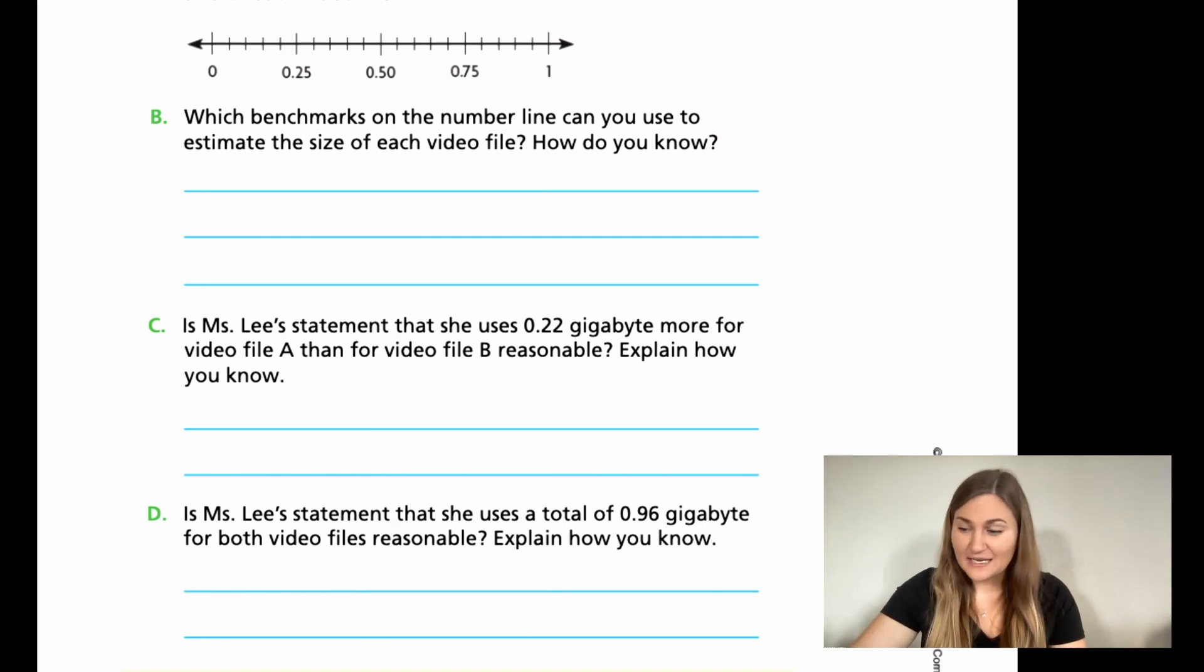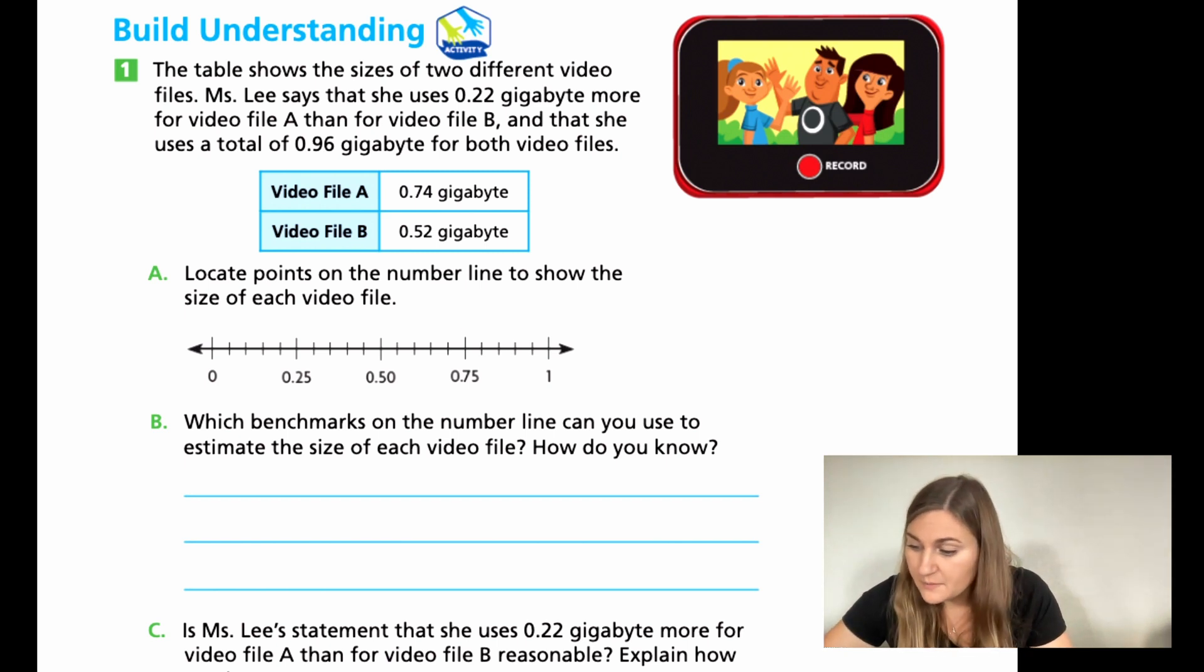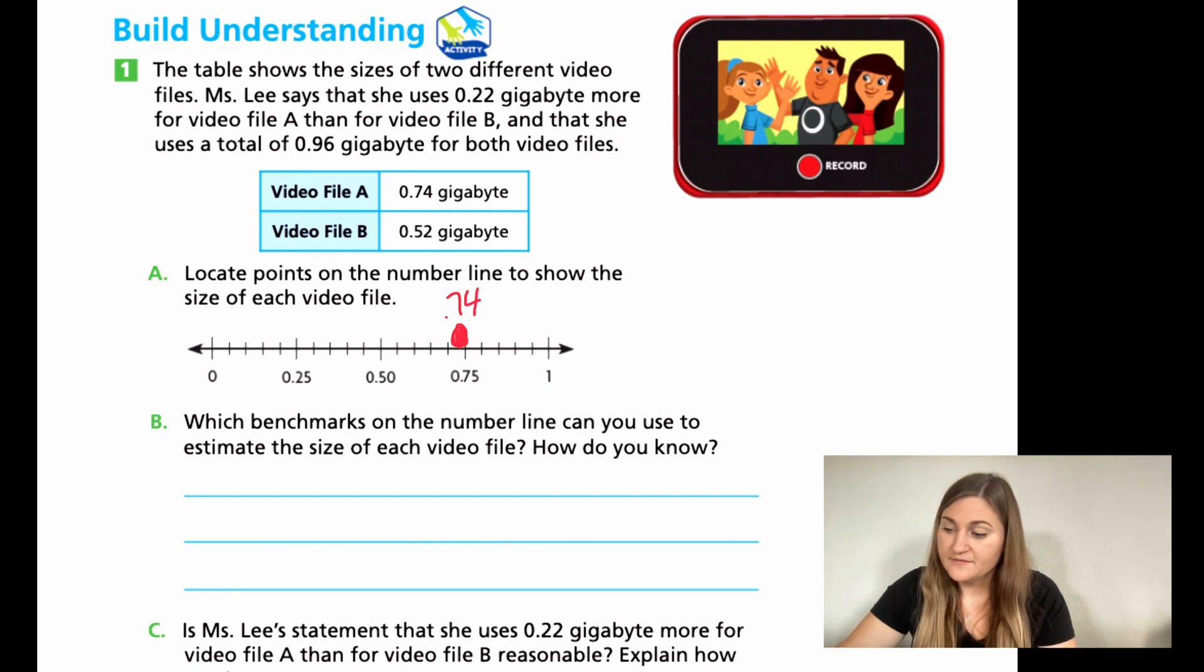All right, great. Let's go ahead and solve these together. So for A, I'm actually going to do it in a different color than black. Let's go ahead and do it red so it stands out. So for my 0.74, I know if I'm thinking cents and I'm thinking quarters, which is the best way to find benchmarks, 74 cents is pretty close to 75. And I know that if I have three quarters, I'm going to have 75 cents. And again, that was if it was in a fraction, but this is already in a decimal. So I know that 74 and 75 are right next to each other. So I'm going to put my red dot just slightly before that 75. So here's my 0.74. Then my 0.52 is just past my 0.50.